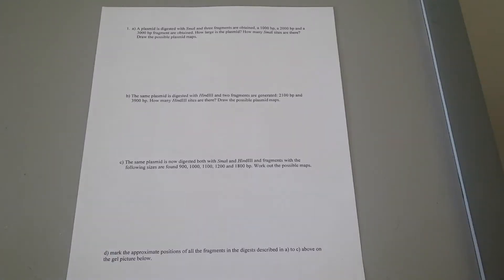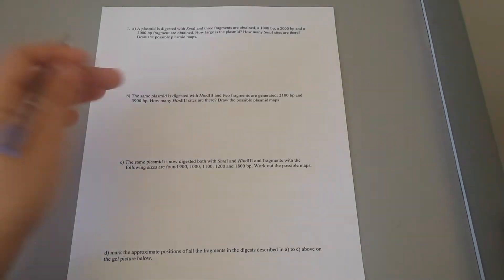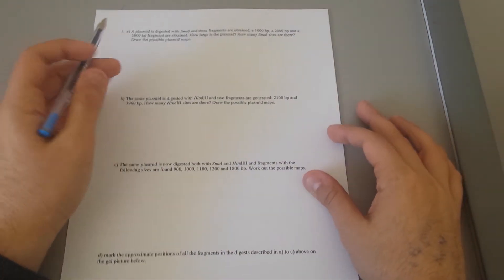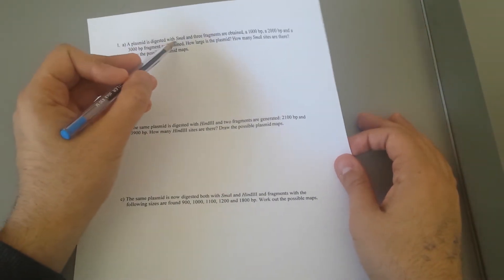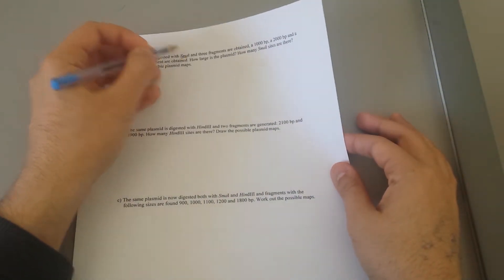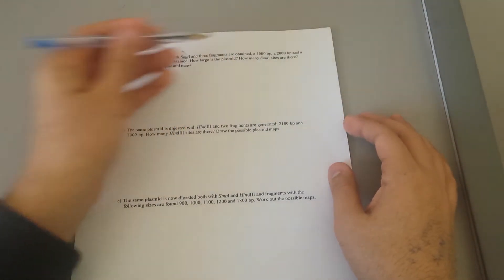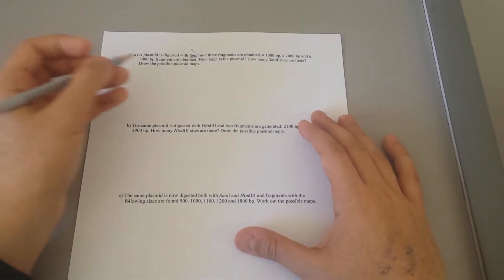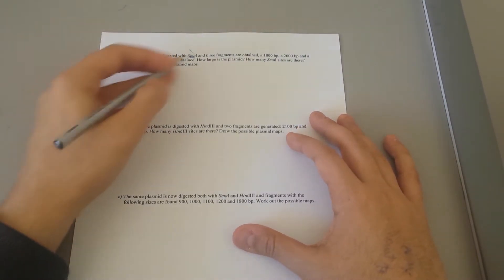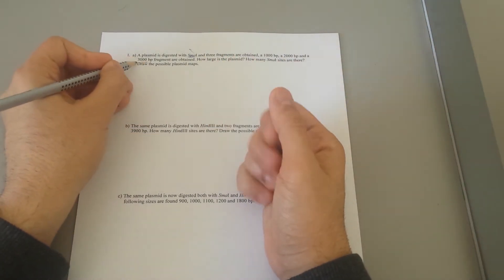Hi guys, today I'm going to show you more examples of restriction mapping and endonuclease enzymes and how to answer the questions on those topics. The question is asking: we have a restriction endonuclease enzyme known as SmaI that has cut the plasmid into three different fragments — how large is that plasmid? There are the possible plasmid maps. So what do we do? We've been given an enzyme and three different fragments. Always start by drawing the largest fragment.